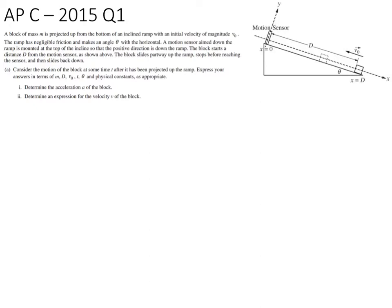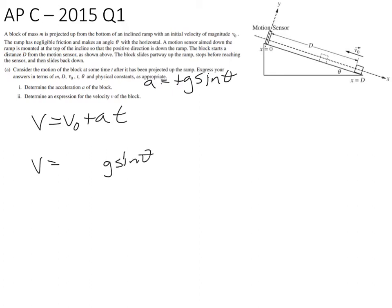Now part two is where they want the velocity of the block. Again, we could either use algebra or calculus. I'm going to start off with the algebra part. We already know the acceleration is a positive g sinθ. They want an expression for the velocity of the block. If I look at this equation — V equals V₀ plus AT — I can start plugging in numbers. I already know what A is: A is g sinθ, so that gives us g sinθ times T.